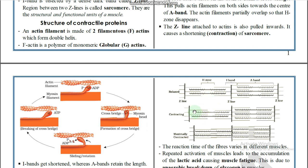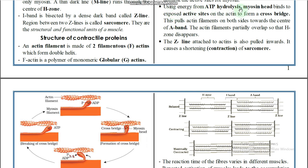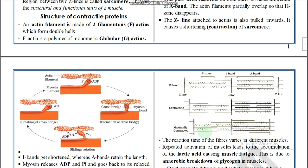Myosin is stationary but actin only moves. Using energy from ATP hydrolysis, the myosin head binds to the exposed active sites on actin to form a cross-bridge, pulling the actin filaments on both sides towards the center of the A band. The H zone completely disappears on strong contraction. The Z line attached to actin is pulled inward, causing a shortening of the sarcomere. The I band moves but the A band stays the same — actin moves, myosin is stationary.